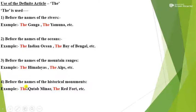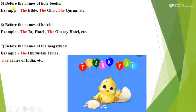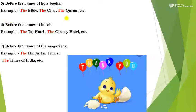Point number 4: before the names of historical monuments. Example: The Qutub Minar, The Red Fort. So before historical monuments we have to use the definite article The. Point number 5: before the names of holy books. Example: The Bible, The Gita, The Quran. Point number 6: before the names of hotels. Example: The Taj Hotel, The Oberoi Hotel, etc. Point number 7: before the names of magazines. Example: The Hindustan Times, The Times of India, etc.